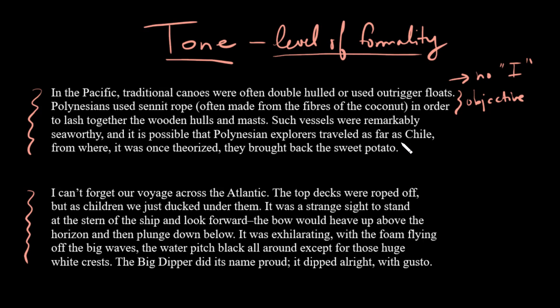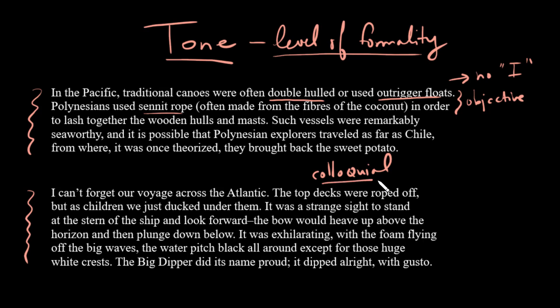In the Pacific, traditional canoes were often double-hauled or used outrigger floats. Another thing you see here is the use of fairly technical jargon, which is more common in formal academic writing. We also typically see a more elevated diction, so you would not expect to see swear words or slang or what's sometimes referred to as colloquial writing. The word colloquial means really just slang or common-day speech — so no colloquial phrases in academic writing.